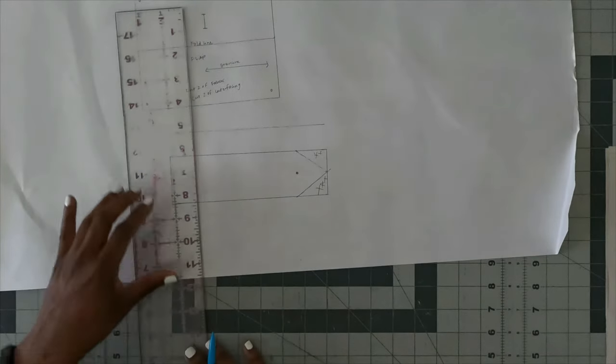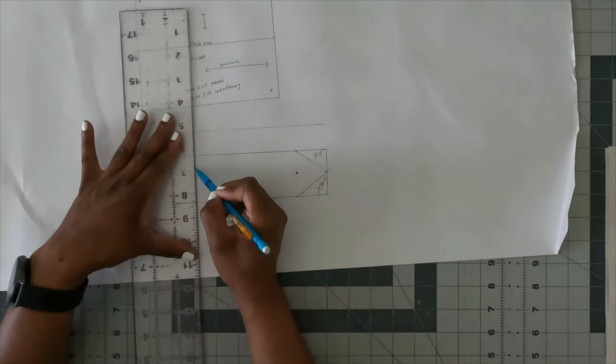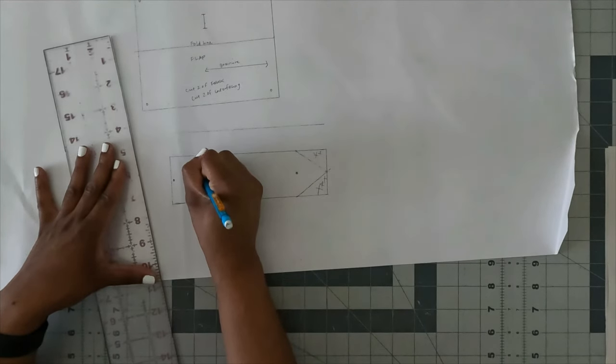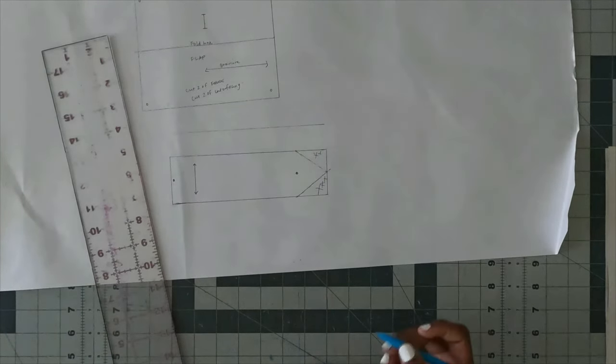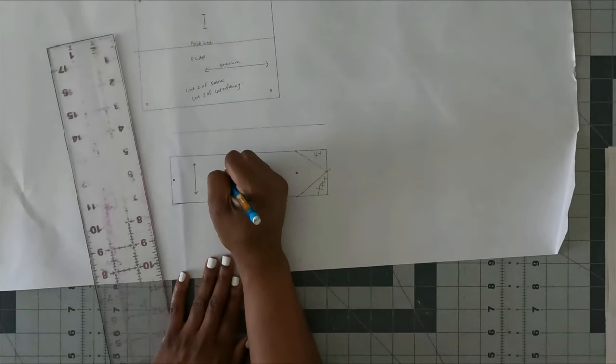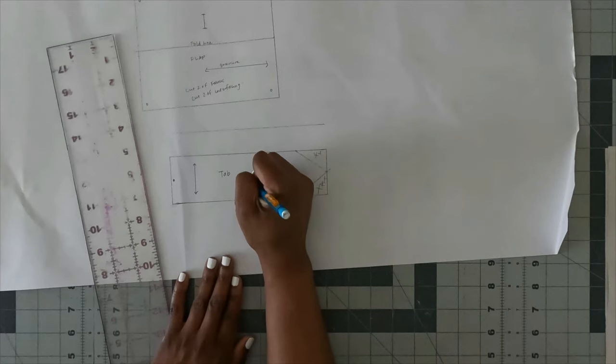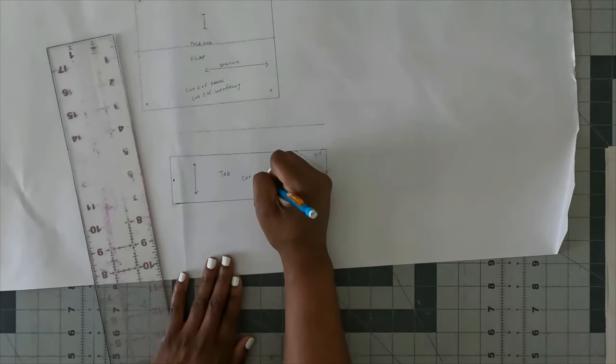Now, the only thing I have to do is label and put my grain line in. So my grain line is going up and down. And then I'm going to label this tab. And then I'm going to cut four of fabric and two of interfacing.